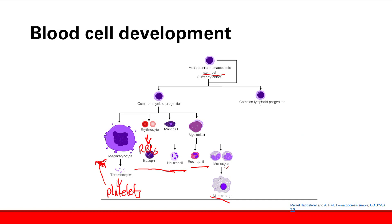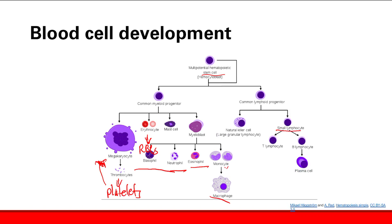Now let's turn our attention to common lymphoid progenitors. Given the name lymphoid, you get lymphocytes here. What you can get here are natural killer cells — these are large granular lymphocytes. Or you can get smaller lymphocytes, either a T cell or a B cell. Remember that B cell becomes a plasma cell when it's activated. So the lymphocytes: specifically T cells, B cells from small lymphocytes, and natural killer cells which are the larger lymphocytes — those are from the common lymphoid progenitors.